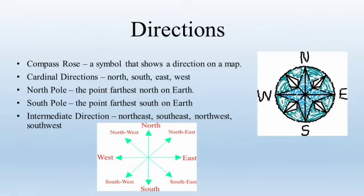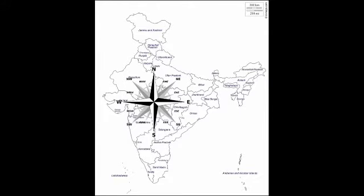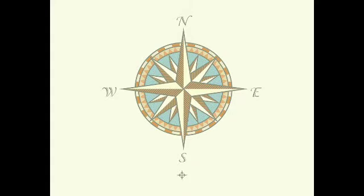Maps are drawn in such a way that North is always on the top. Remember this point: whenever you look at a map, the topmost direction will always be North, and South is always at the bottom. So if North is at the top, then at the bottom it will always be South.